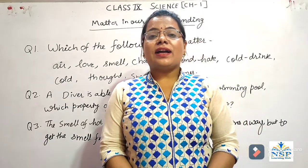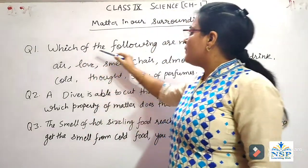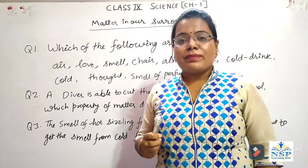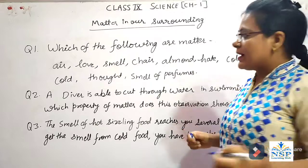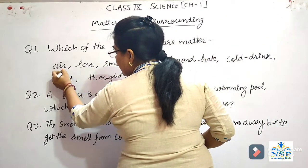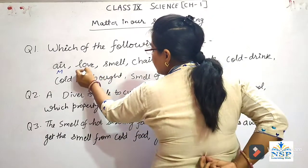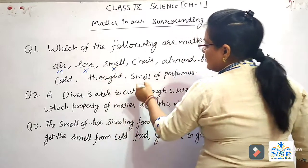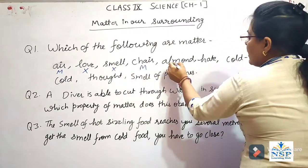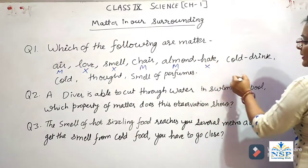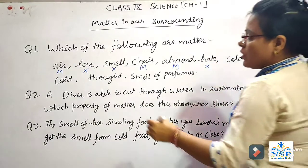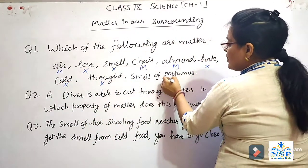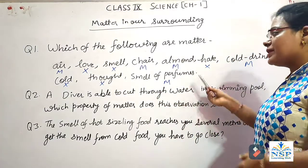Now, it is done for question. Question number one: Which of the following are matter? Students, we know the substance which have mass and also occupies space is called matter. Air is matter because it has mass. Love is not a matter, it's a feeling. Smell is not a matter. Chair is a matter. Almond is a matter. Hate is not a matter. Cold drink is also a matter. Cold is not a matter. Hot is not a matter. Smell of perfume is a matter because it is in the form of gases.